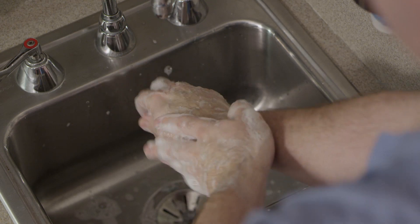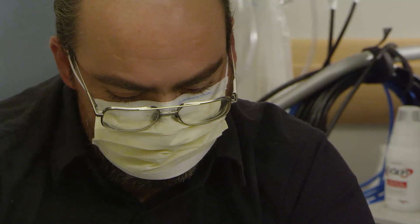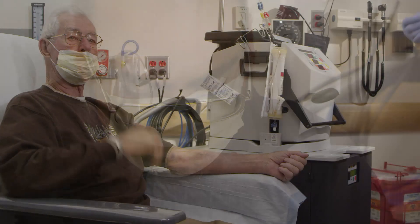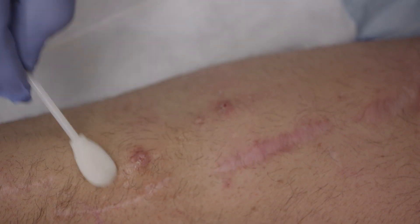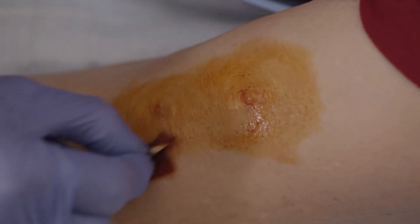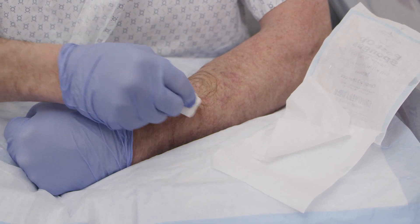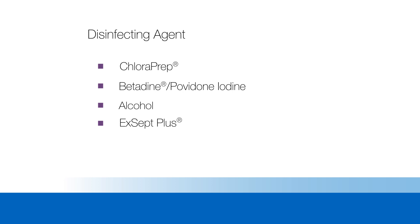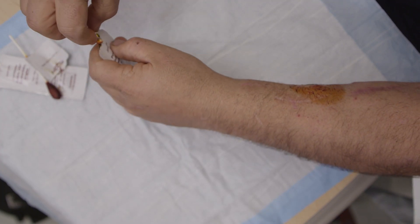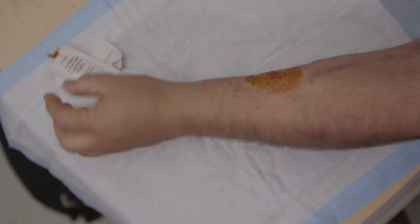Preparing the site: Wash hands and access with antibacterial soap. Put on a clean face mask. Wearing a face mask helps prevent the spread of bacteria from the nose and mouth during the disinfection and cannulation procedures. Disinfect buttonhole sites with an approved disinfecting agent. Commonly used agents include chloroprep, betadine, povidone iodine, alcohol, and Except Plus. Make sure to follow the manufacturer's directions for contact time, motion for cleaning, and drying time. Use a different swab or pad to disinfect each site.